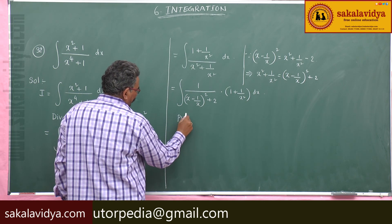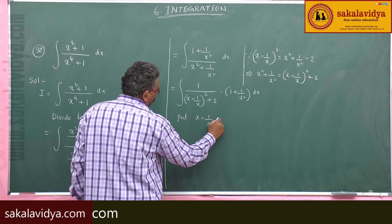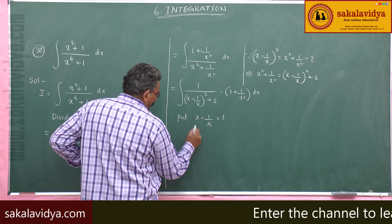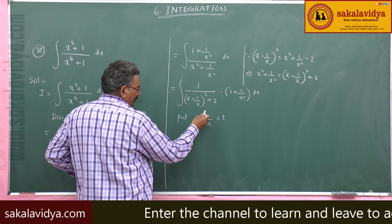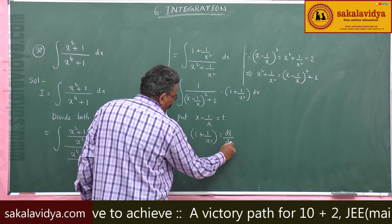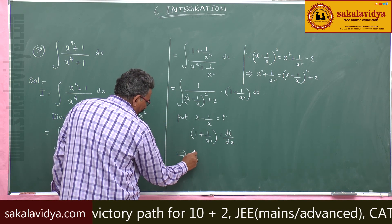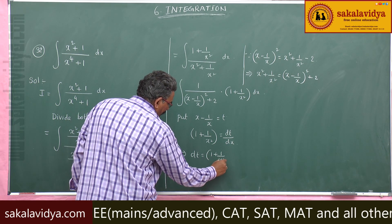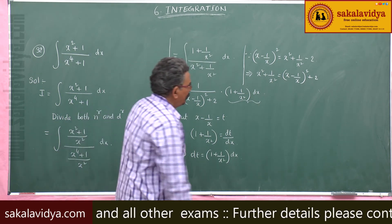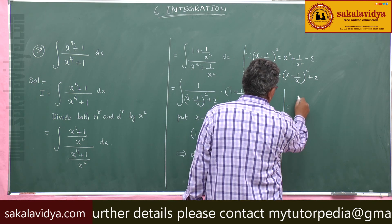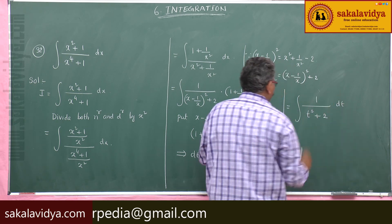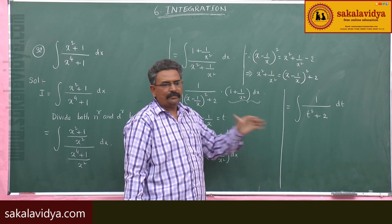Now put x minus 1 by x equal to t. Differentiate both sides with respect to x. Derivative of x is 1, and derivative of minus 1 by x is plus 1 by x square. So 1 plus 1 by x square equals dt by dx. Therefore dt equals 1 plus 1 by x square dx. This is nothing but dt, and the denominator becomes t square plus 2. So this becomes integral of 1 by t square plus 2 dt.